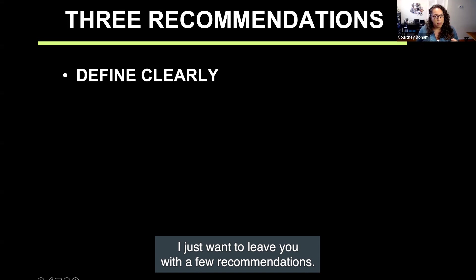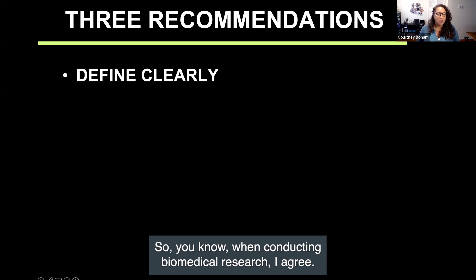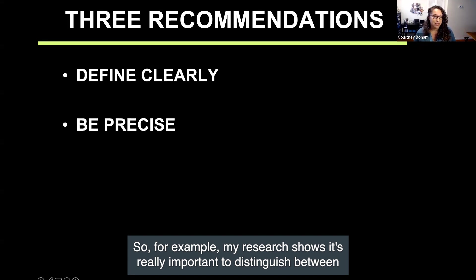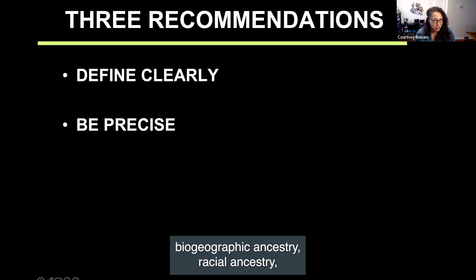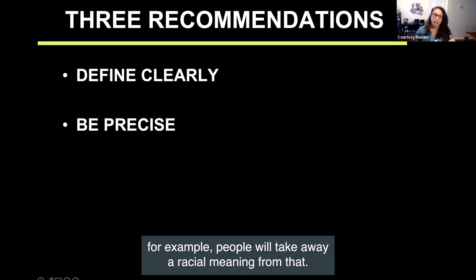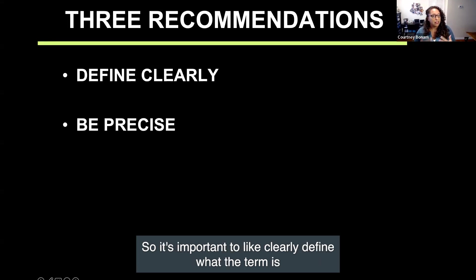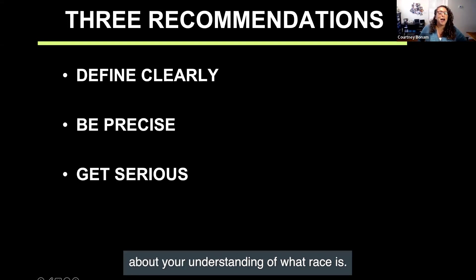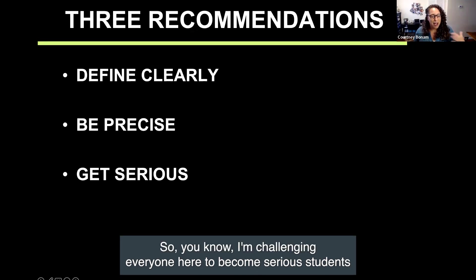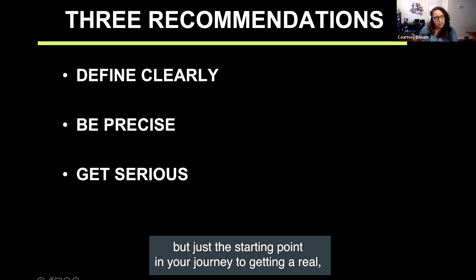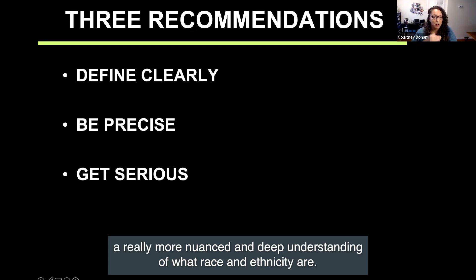Just reflecting on everything, I want to leave you with a few recommendations. When conducting biomedical research, it's important to define these terms clearly and use precise language—for example, distinguish between biogeographic ancestry, racial ancestry, and ethnic ancestry, because if you just use the term 'biogeographic ancestry,' people will take away racial meaning from that. It's also important to get serious about your understanding of what race is. I'm challenging everyone here to become serious students of critical race and ethnic studies, to let this not be the end point but just the starting point in your journey to a deeper, more nuanced understanding of what race and ethnicity are.